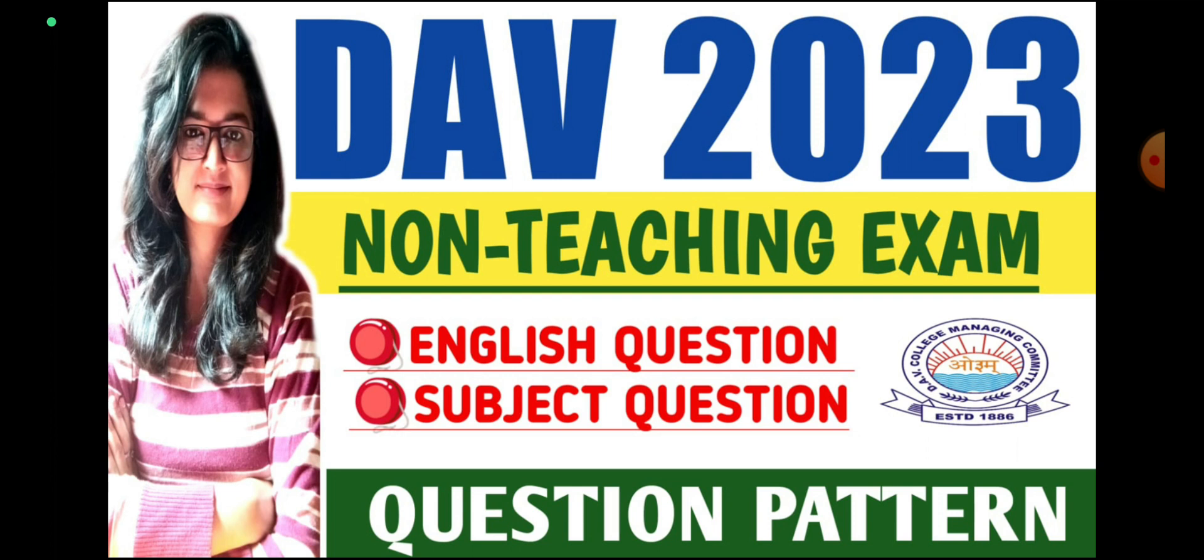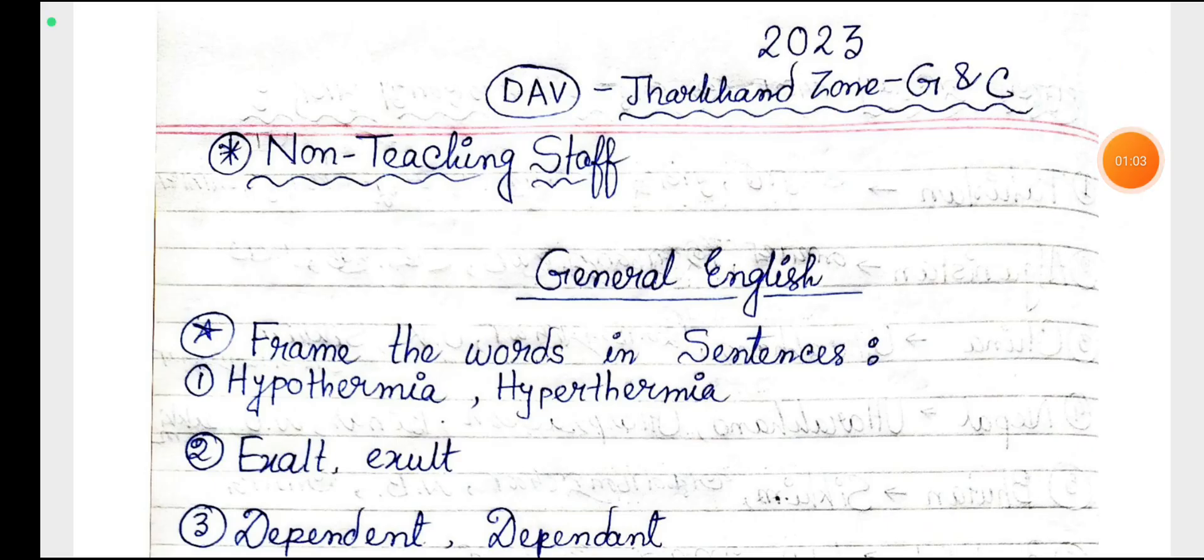Let's go. In the DAV 2023, the English and subject questions came in Jharkhand Zone. I will share with you. First of all, I want to tell you that in West Bengal Zone there are two years of CBT, meaning computer-based tests with MCQ-type questions, meaning objective-type questions. But in Jharkhand Zone there is no CBT, there is written examination.